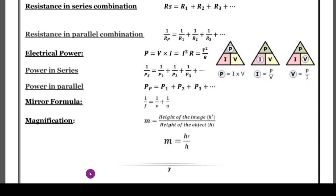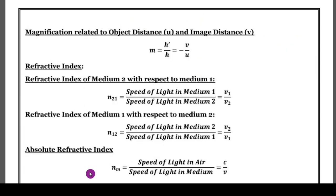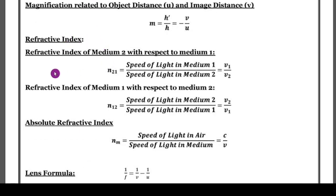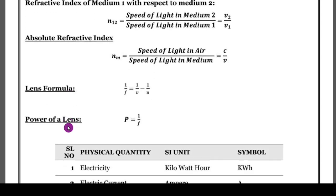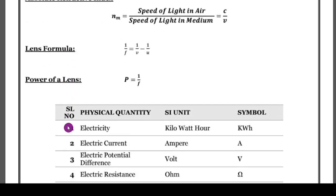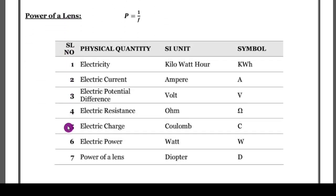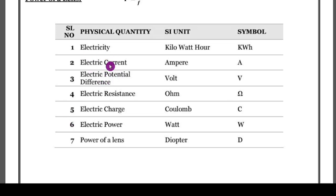Electrical power, power in series, and power in parallel are important. The mirror formula and magnification are very important because from the light chapter they ask problems along with diagrams, so you have to practice both. Also, the refractive index formula, absolute refractive index, lens formula, and power of a lens are all given. A very important concept is the SI units of physical quantities and the symbols used — I have given seven quantities with their SI units and symbols, which you must practice thoroughly.